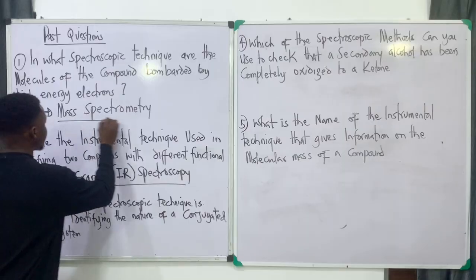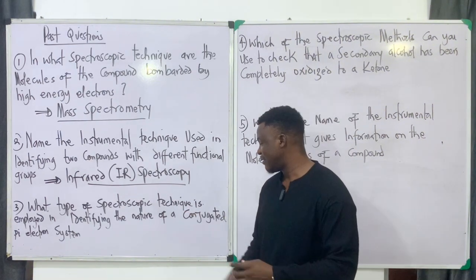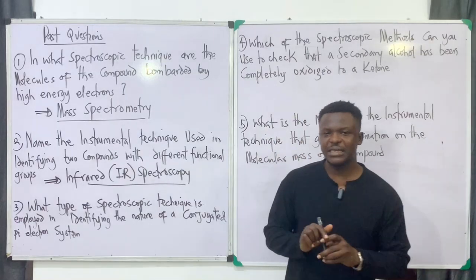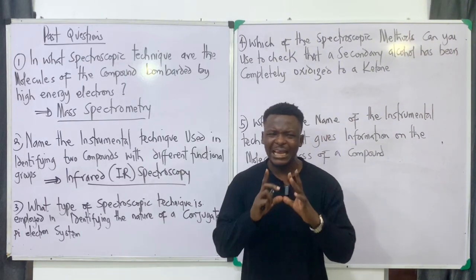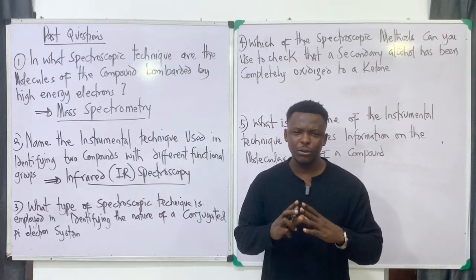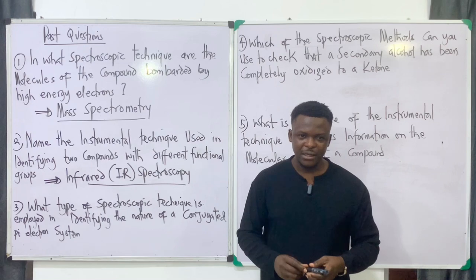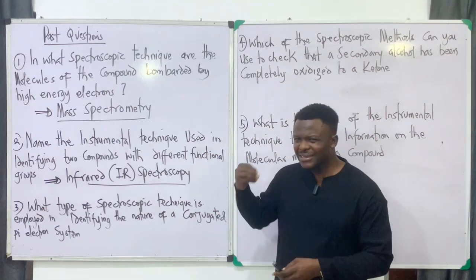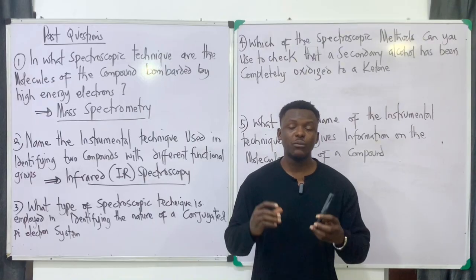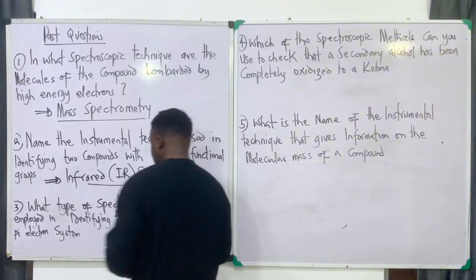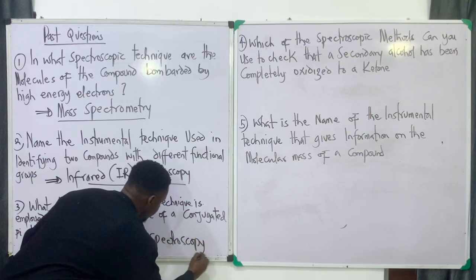Practice question three: What spectroscopic technique is employed in identifying the nature of a conjugated pi electron system? Pi electrons are only present in double bonds or triple bonds. Since this involves a conjugated pi system, the answer is UV visible spectroscopy, where UV stands for ultraviolet.